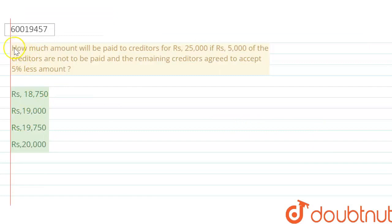Hello everyone! Let's begin with the question. How much amount will be paid to creditors for Rs. 25,000 if Rs. 5,000 of the creditors are not to be paid and the remaining creditors agree to accept 5% less amount?